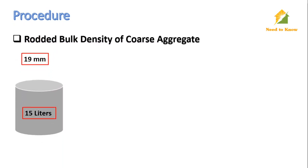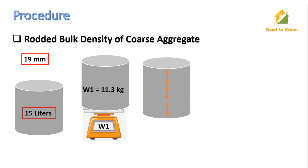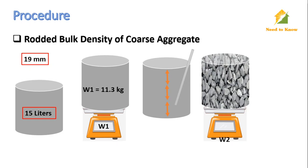Now to measure the rodded bulk density of coarse aggregate, we take the same 19 mm sample and the same 15-liter bucket. Again we weigh the empty bucket — W1 — and the weight of the empty bucket is 11.3 kg. Now fill the bucket with aggregate in 3 layers and tamp every layer 25 times. After filling in 3 layers, level the surface and weigh it again — W2. The weight of the aggregate-filled bucket is 34.9 kg because of the tamping, the aggregate is now closely packed so its weight increased.